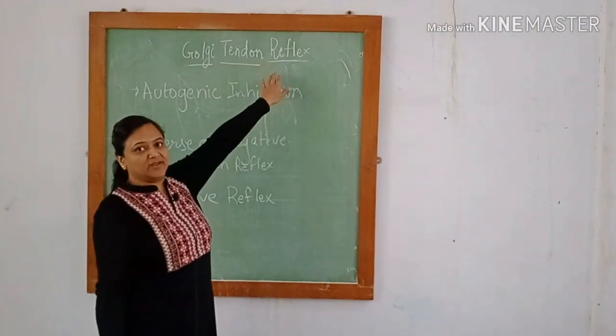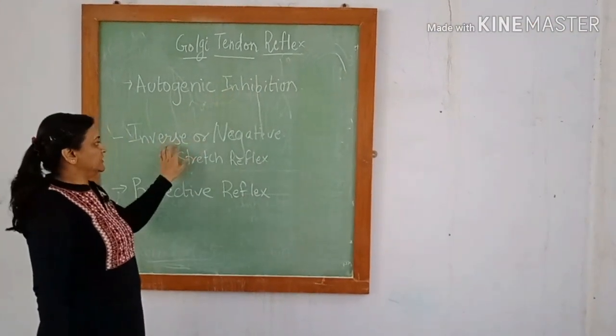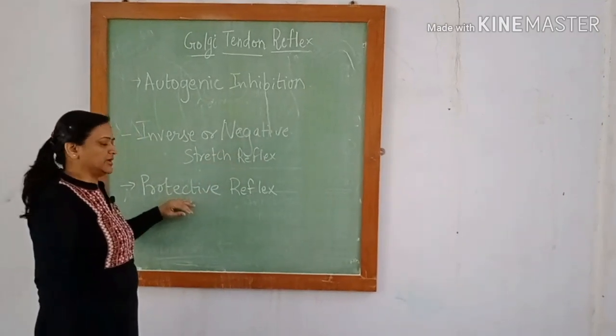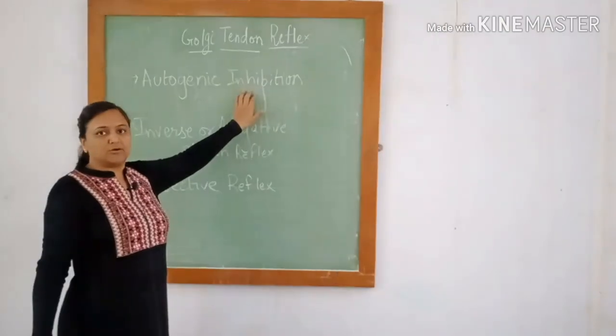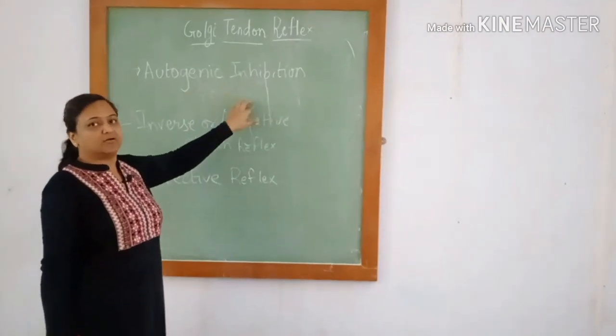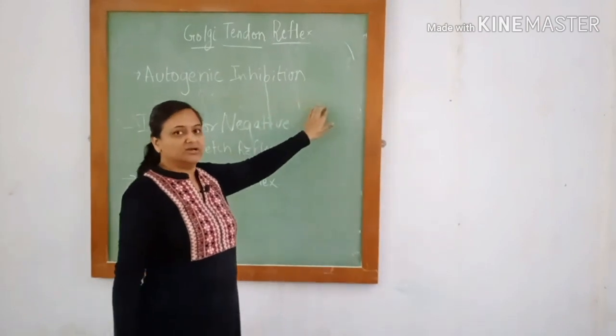Golgi tendon reflex is also known as autogenic inhibition, inverse or negative stretch reflex, and protective reflex. It is called autogenic inhibition because it prevents further contraction of the muscle itself and brings about relaxation.